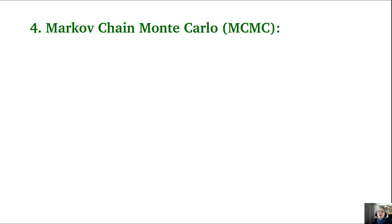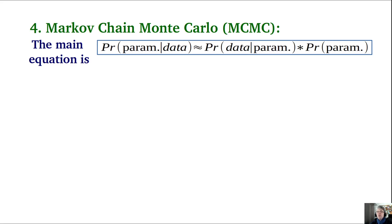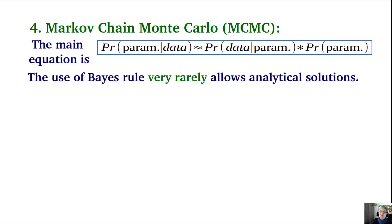Now let's turn to Markov chain Monte Carlo. The main equation of Bayesian parameter estimation is the one we've discussed. The use of this equation rarely allows analytical solutions — only for certain likelihoods and certain prior distributions. This is the point that made Fisher completely disregard and hate Bayesian procedures during his lifetime.